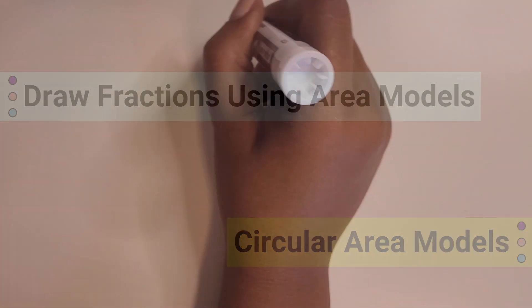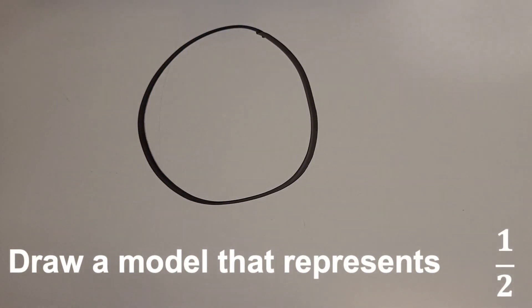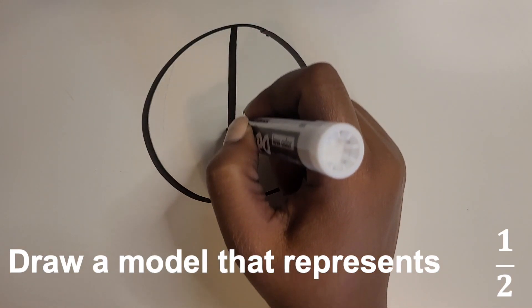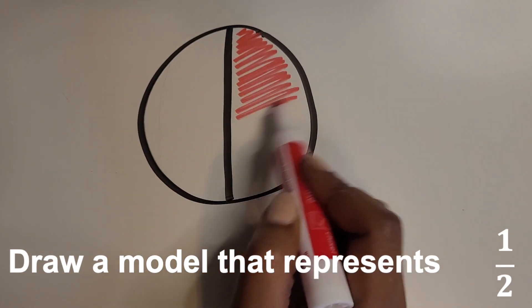Draw fractions using area models. Let's start with one half. Draw a circle best as you can, and draw a line right down the middle vertically. Shade in one side to represent the fraction one half.